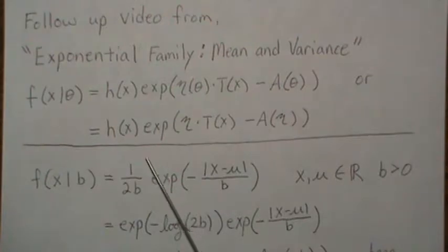If we take the 2b up, that's raised to the minus 1, and that minus will come out front.